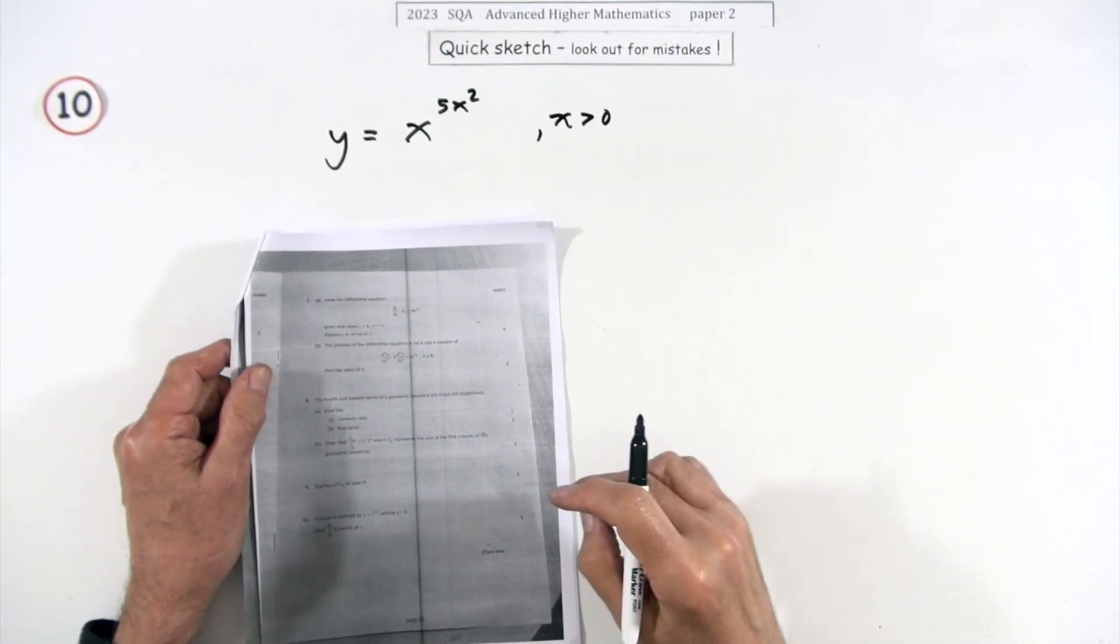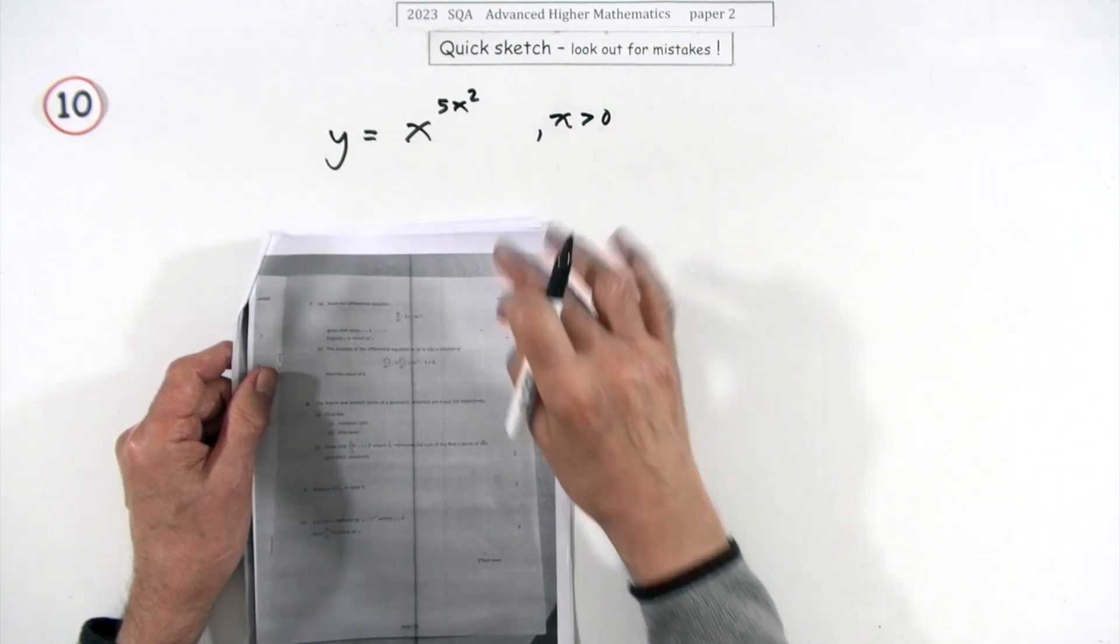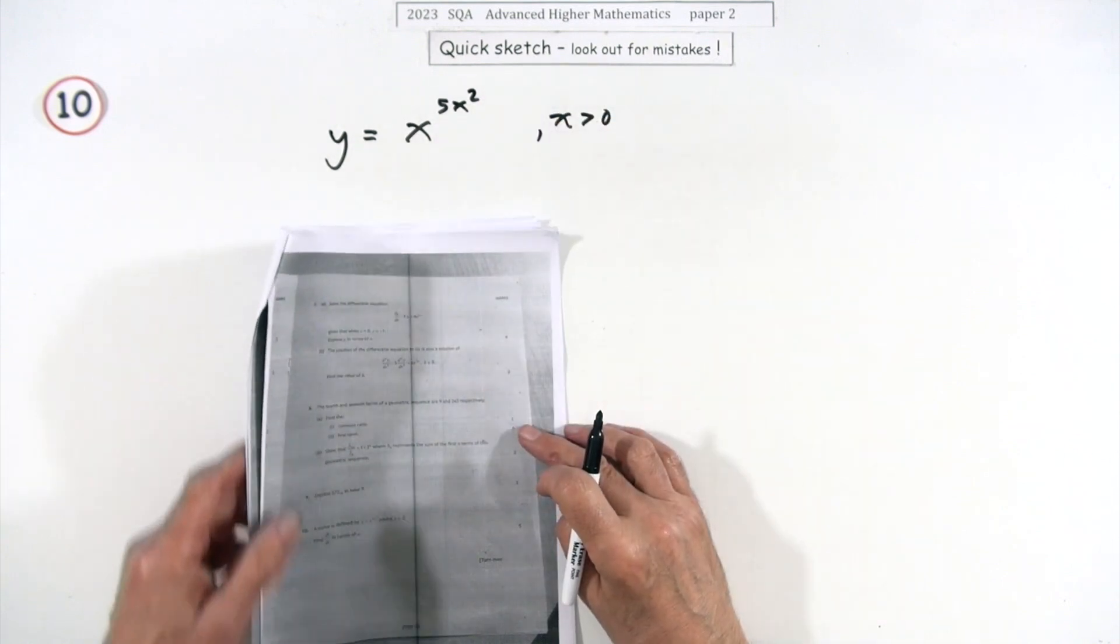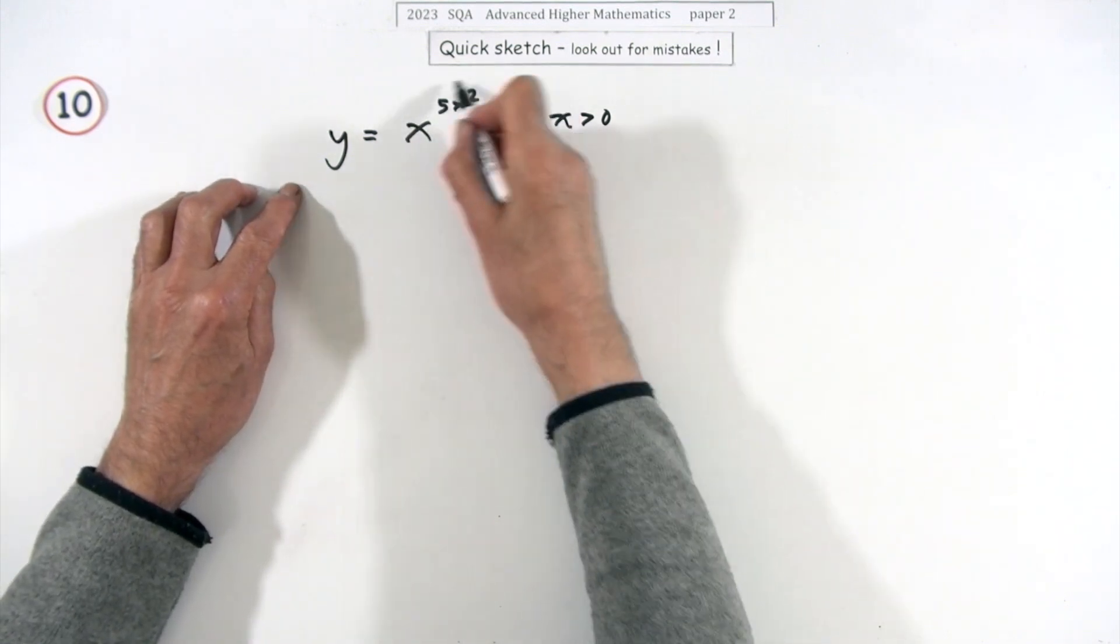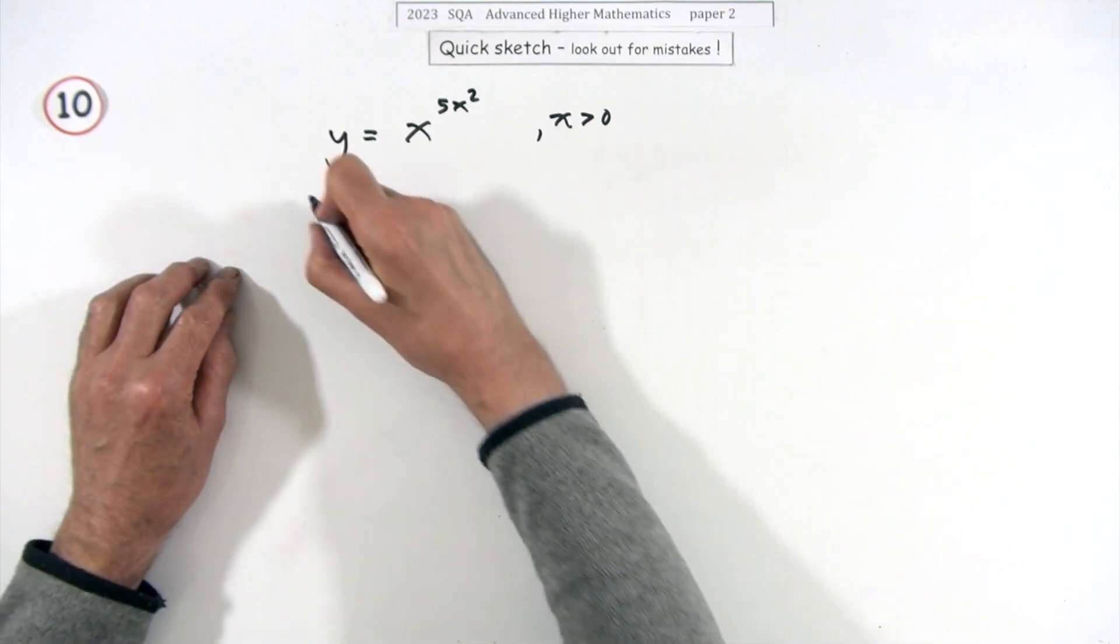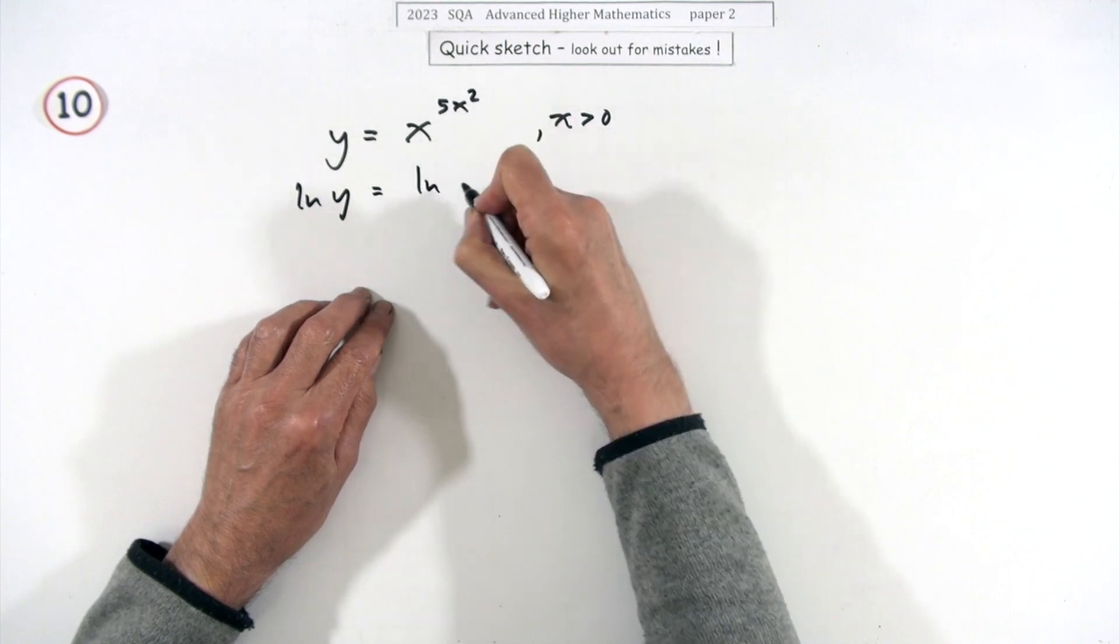Number 10 then, for five marks. A curve is defined by this, which has that awkward little exponential part of the equation. Find dy/dx. Well, the way you deal with ones where the variable is in the exponent position is you take logarithms.